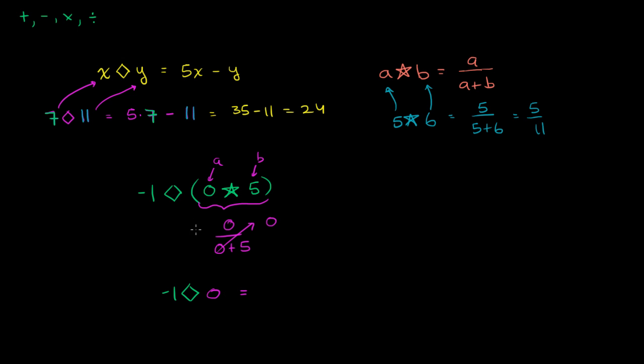Now we go to the definition of the diamond operator. That's 5 times the first number in our operator. So it'll be 5 times negative 1, minus y. Well, y here is 0, minus 0. So 5 times negative 1 is negative 5.